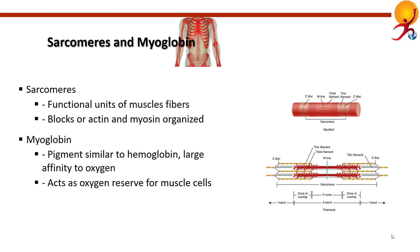If oxygen from hemoglobin and myoglobin is not enough to supply energy to muscle cells, the cells begin to use lactic fermentation in an attempt to compensate for the deficiency. Lactic fermentation releases lactic acid, and this substance causes muscle fatigue and predisposes the muscles to cramps.